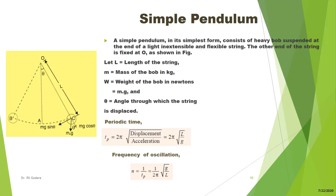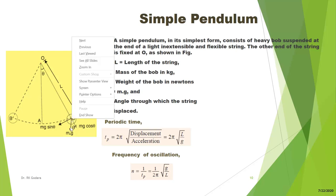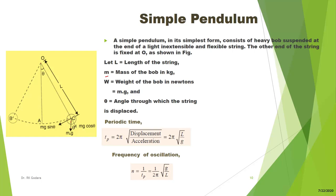L is the length of the string, M is the mass of the bob in kg, and W is the weight of the bob in Newtons, equal to mg acting in the downward direction. Theta is the angular displacement from the equilibrium position.